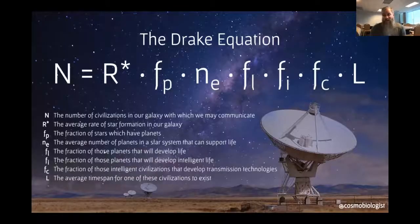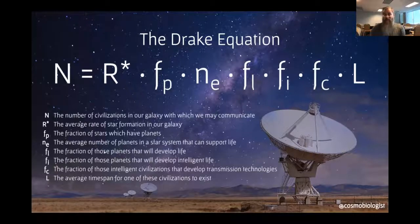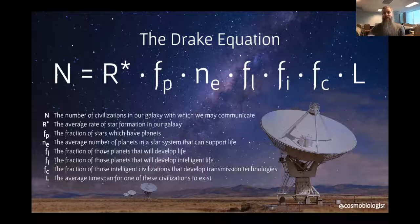Perhaps you've heard of the Drake equation, crafted by astronomer Frank Drake in 1960. It was originally conference proceedings, but it's become famous as an equation that helps us figure out, based on factors we know or could know, how many civilizations might be out there right now who can communicate with us via radio. My favorite part is the very last factor — the L factor — the average time span for a civilization to exist. Astrobiology helps us frame our understanding of what it means to be a species in a biosphere, our own fragile place in the cosmos, and how we can look for life out there.